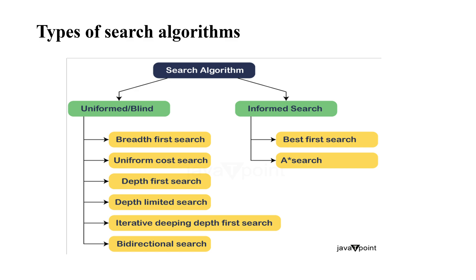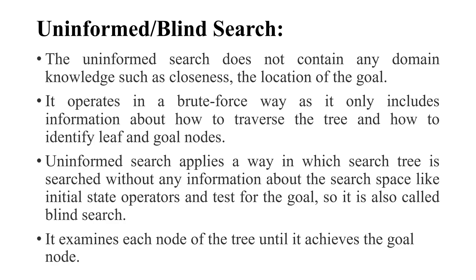Uninformed search is also called blind search. The uninformed search algorithm does not contain any domain knowledge — such as closeness or the location of the goal. This search type does not know anything about the goal: how close the goal is or where it is located.